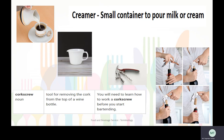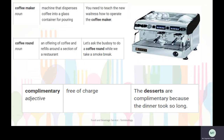Please look at the visual for the four steps of removing the cork from the wine bottle. Coffee maker refers to a machine that dispenses coffee into a glass container for pouring coffee rounds. A coffee round is an offering of coffee and refills around a section of a restaurant — usually the waiters take the coffee around the restaurant for refilling or for second service.